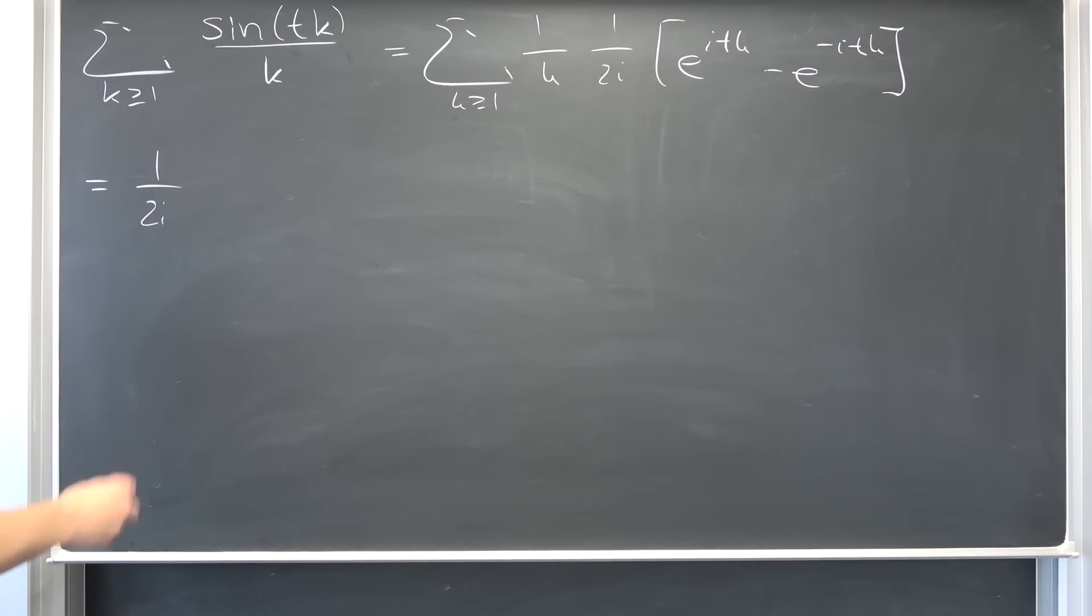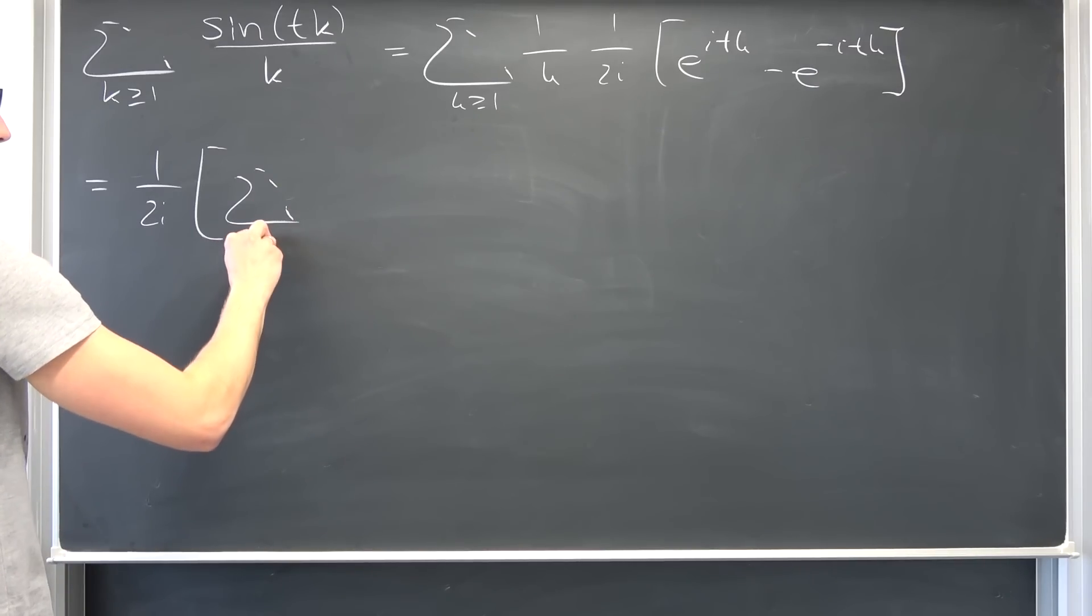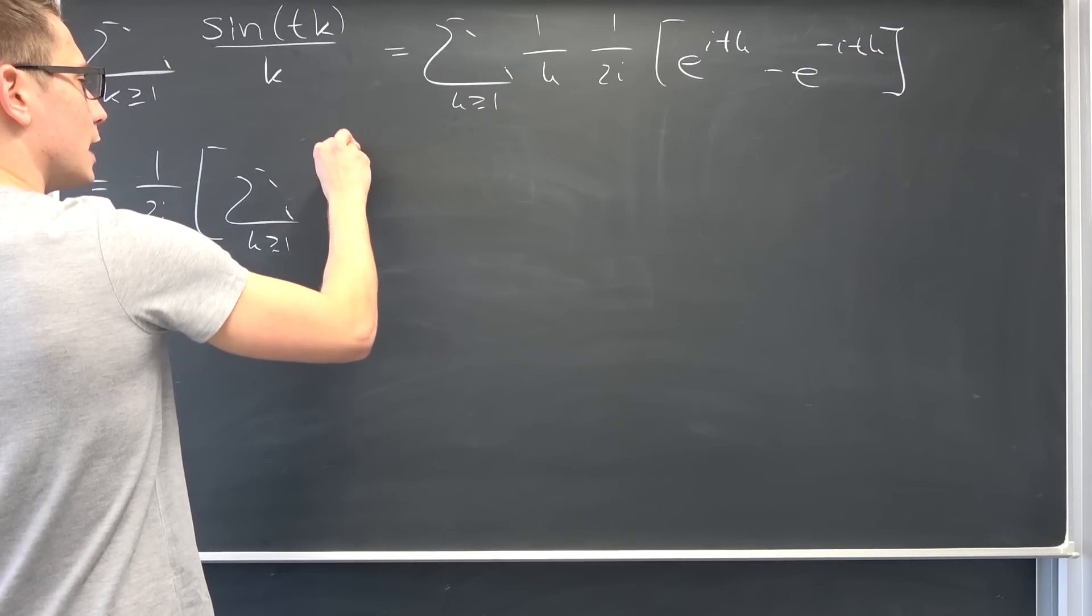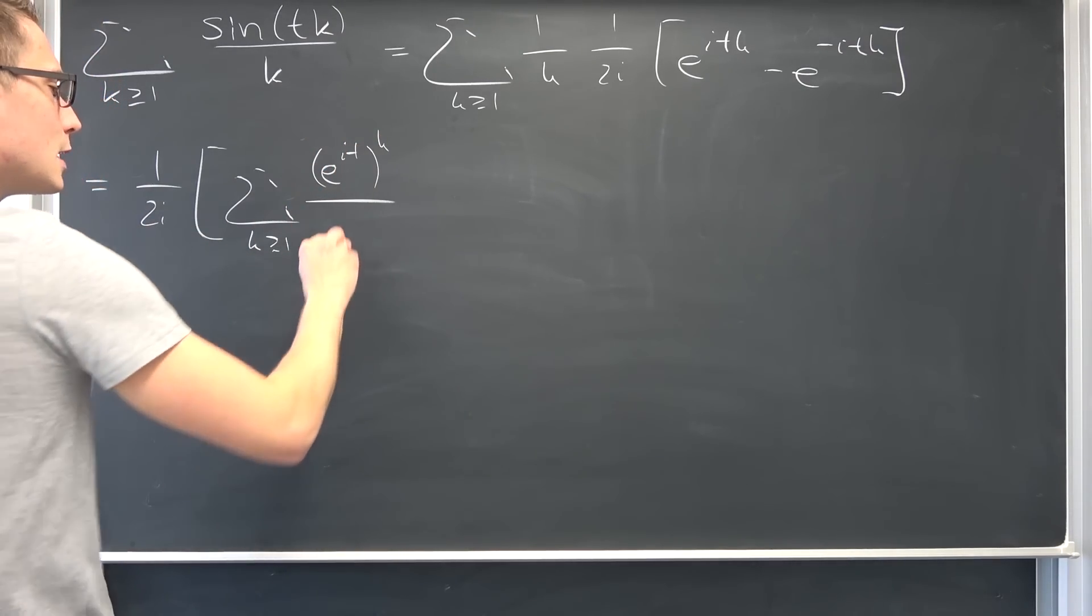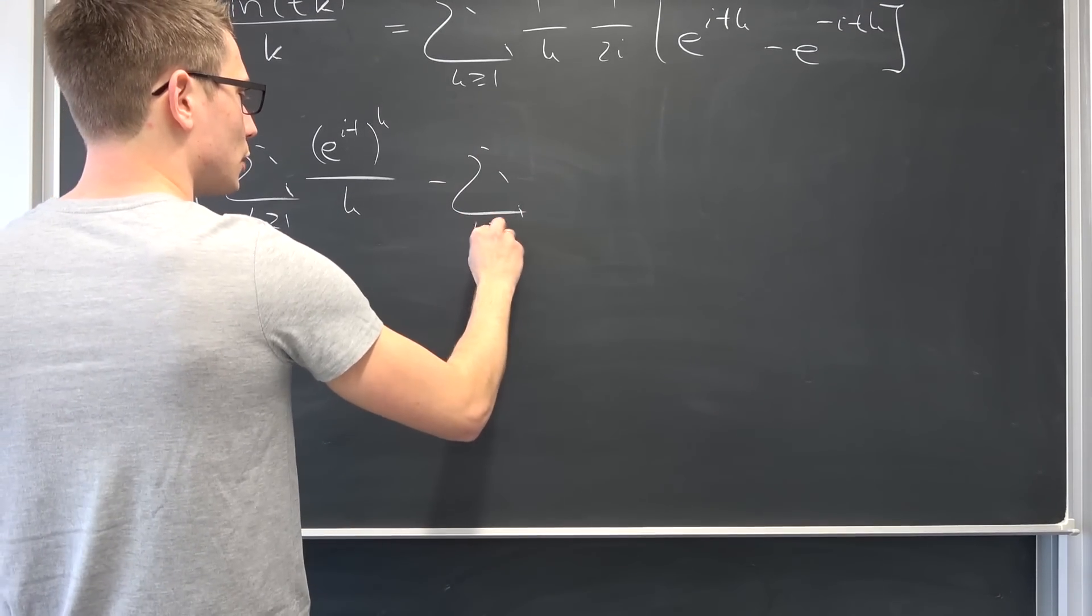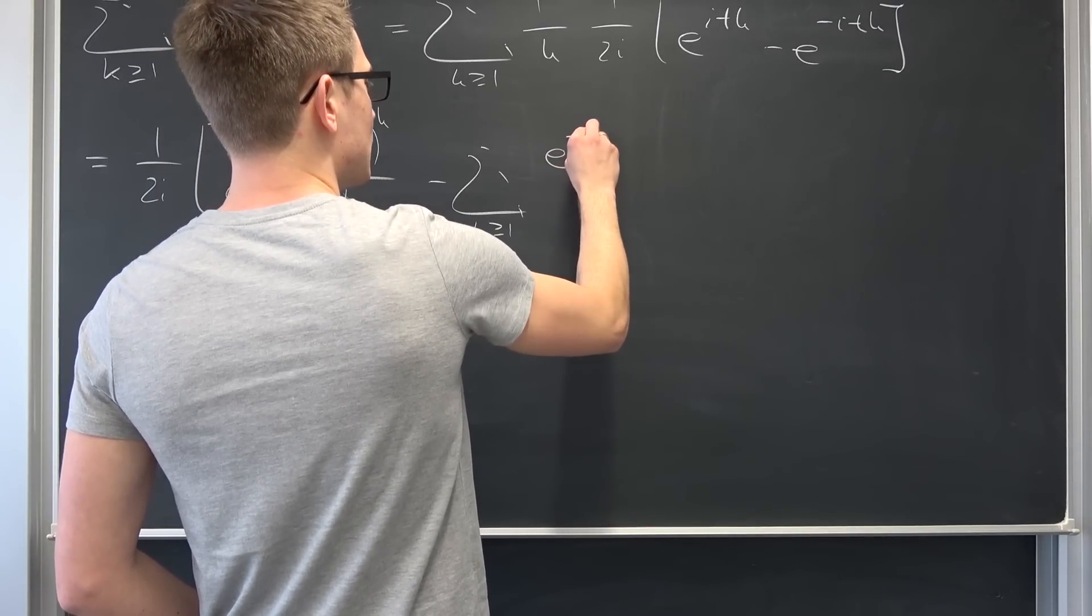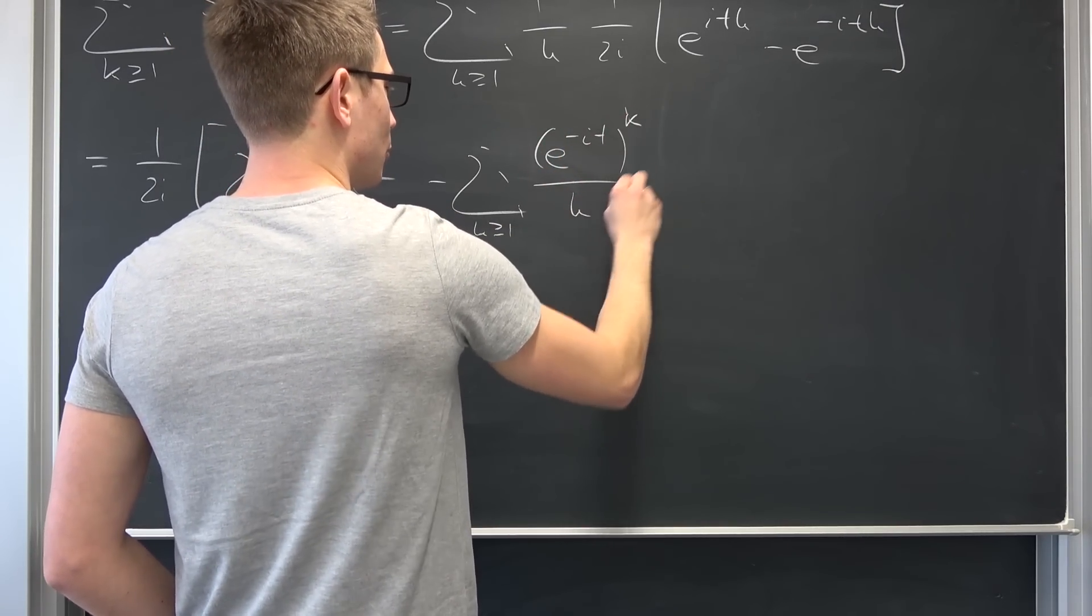So 1 over 2 times i, and then we are going to have this first sum where k goes from 1 to infinity of e to the itk power, I'm going to rewrite it like this on purpose, over k. Minus yet another infinity boy, k being greater or equal to 1 of e to negative itk power over k.